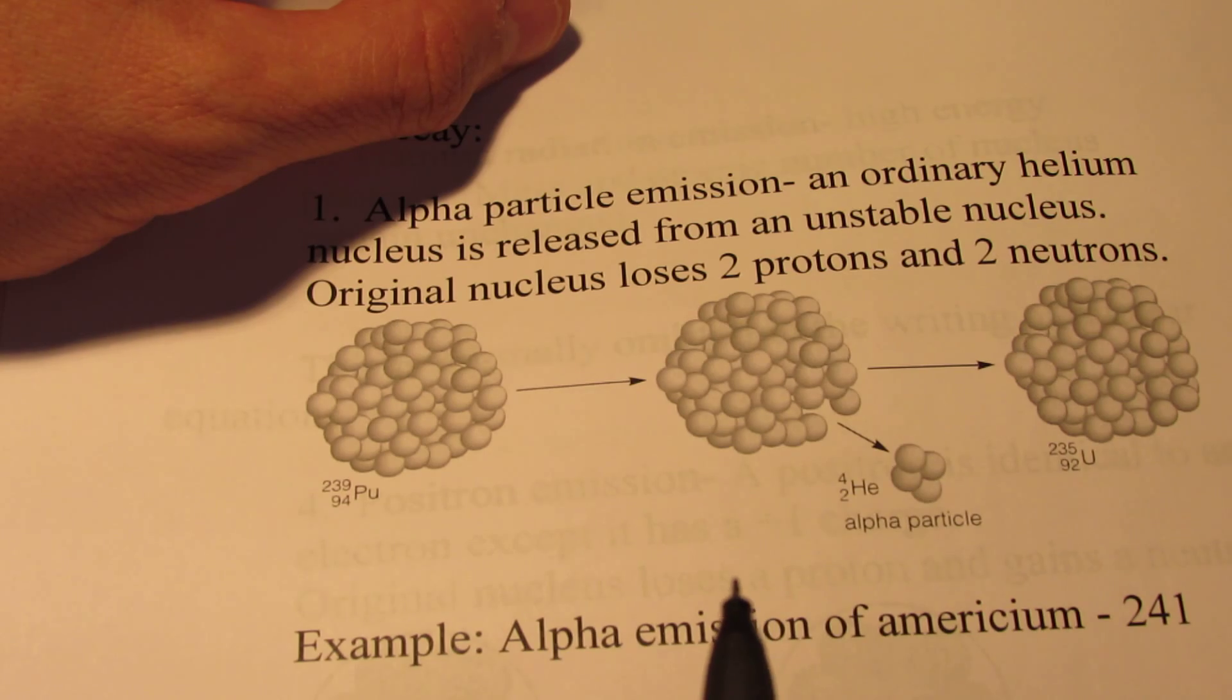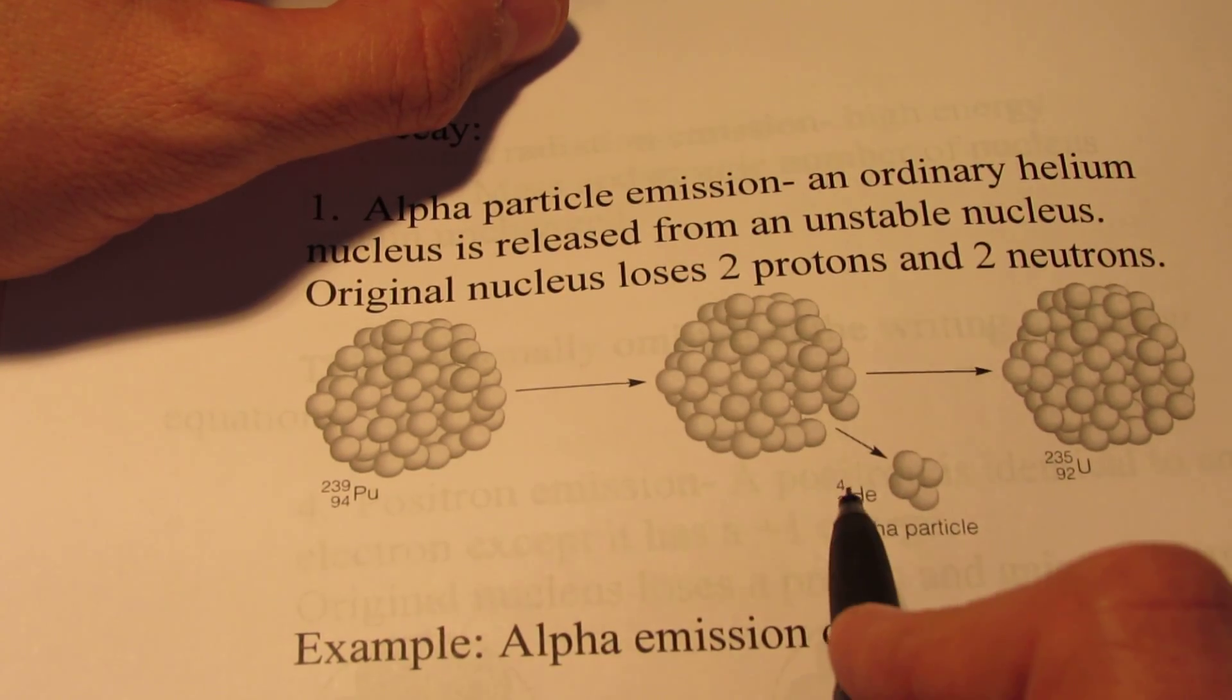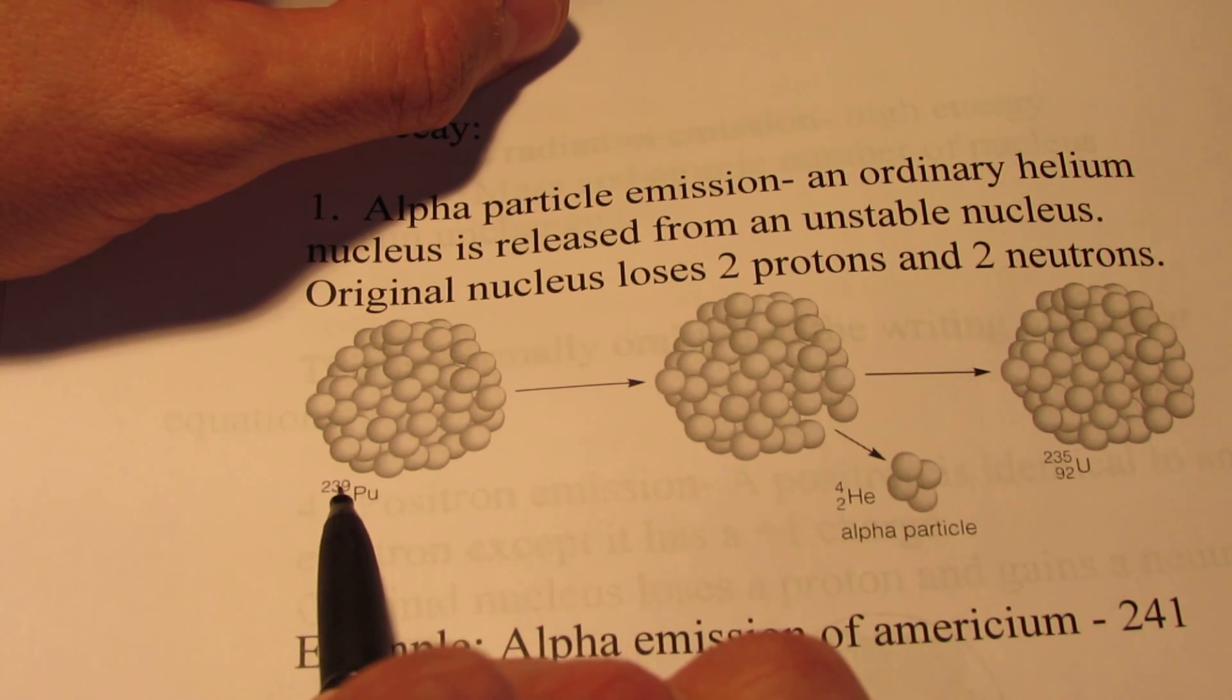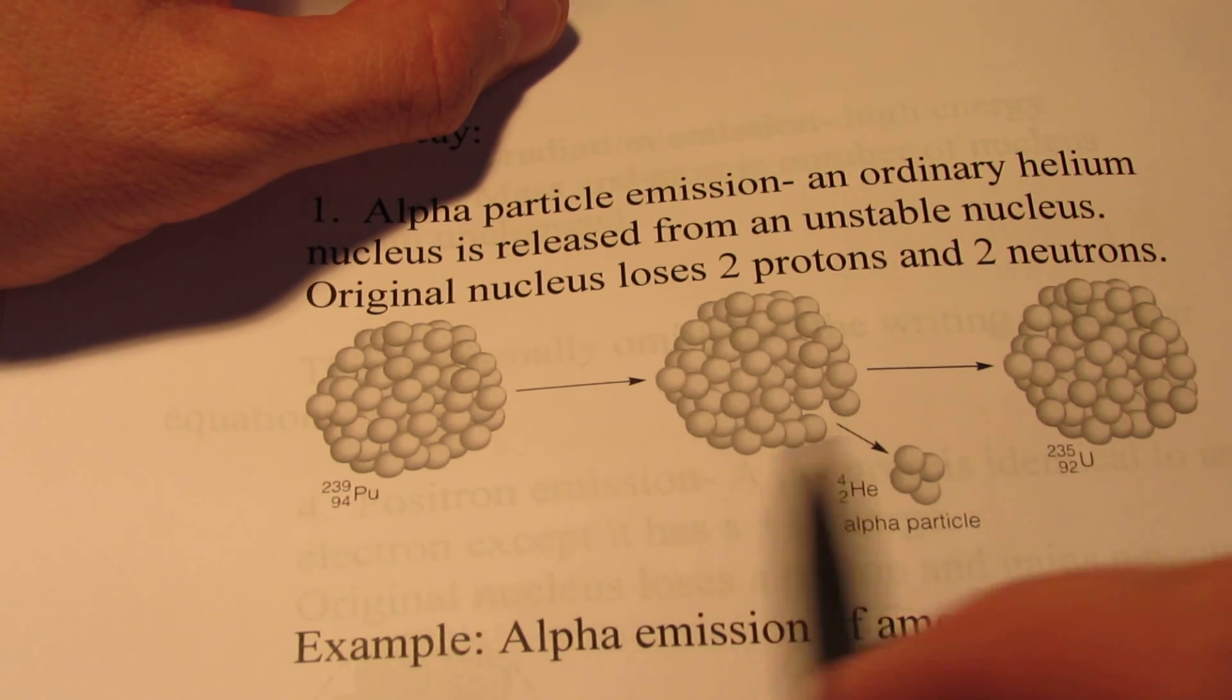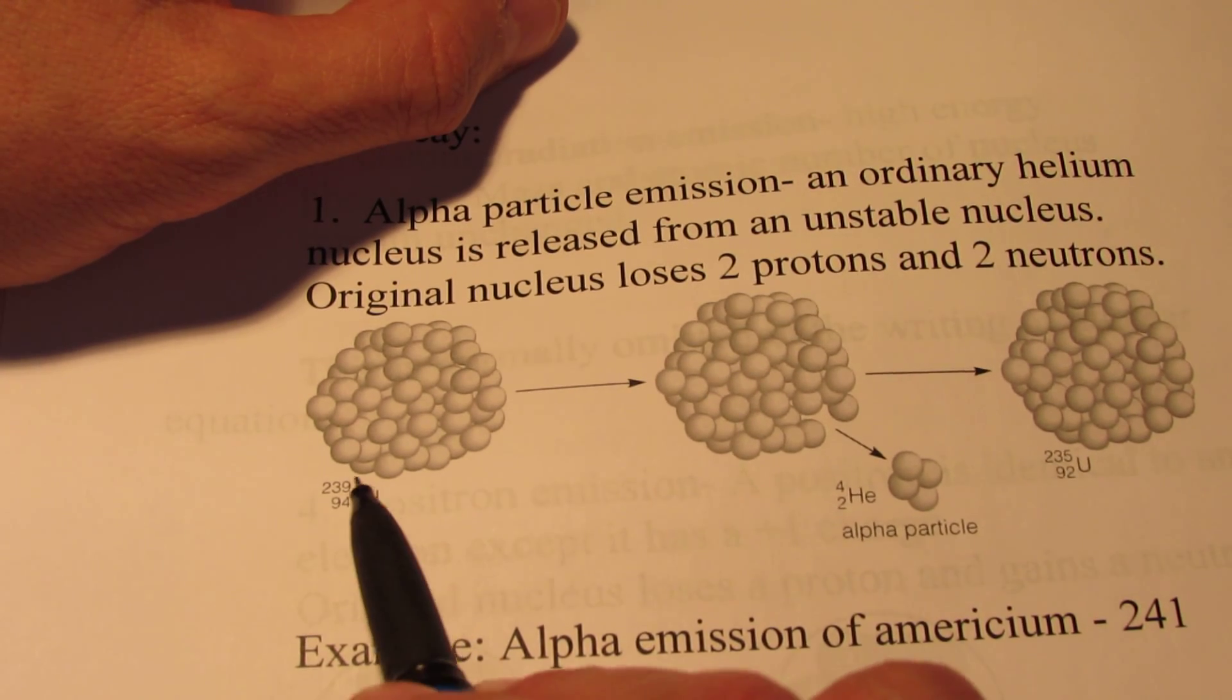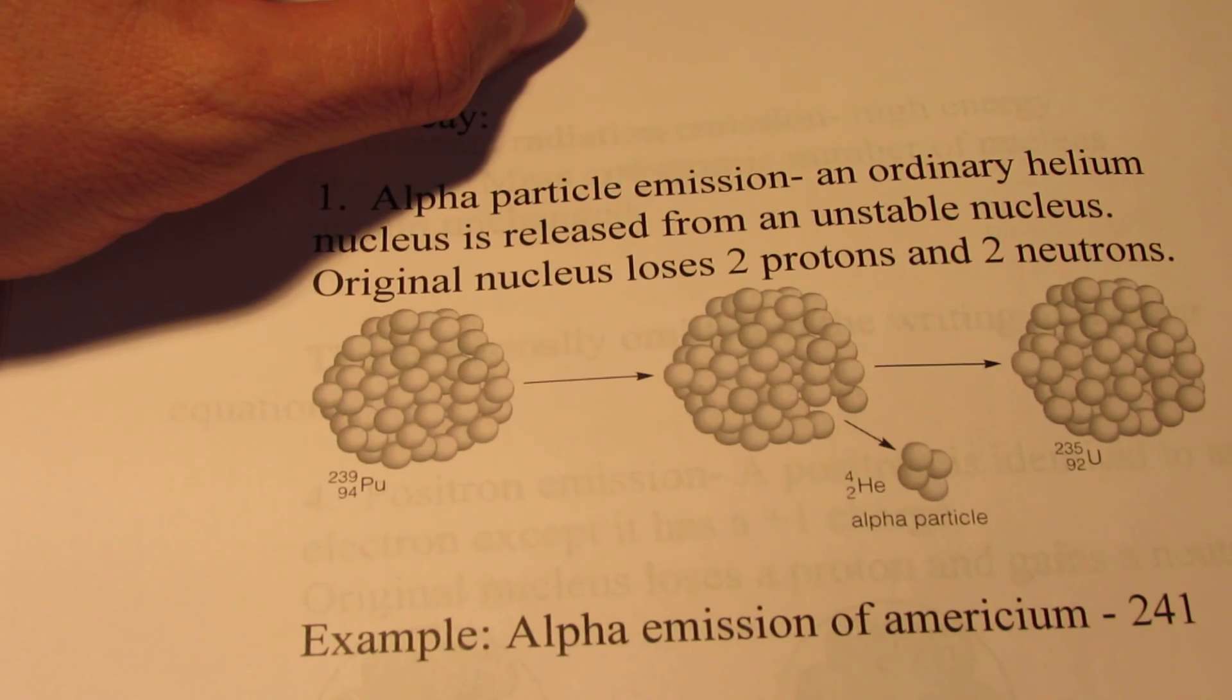In that process, we can actually change the makeup of the nucleus. We also lose two neutrons. So if you lose two neutrons and two protons, the mass will go down by four. So we start with a mass of 239 and we end up with a mass of 235. We start with plutonium with a mass of 239, we end up with uranium with a mass of 235 plus an alpha particle.